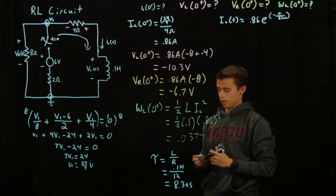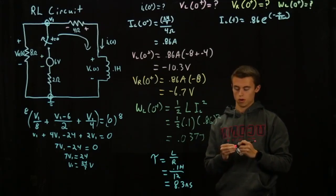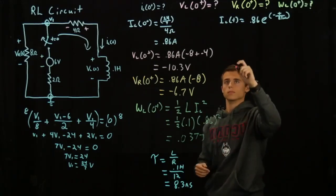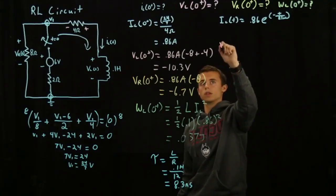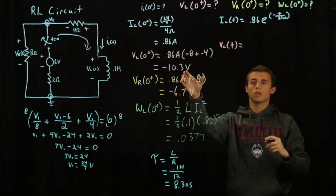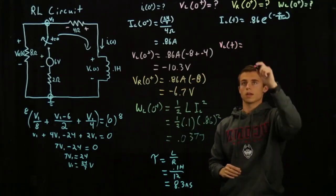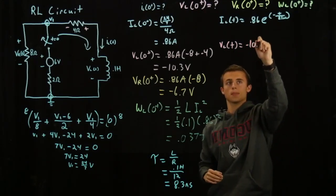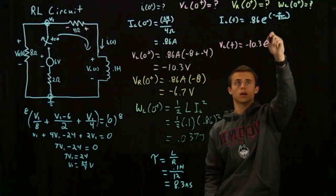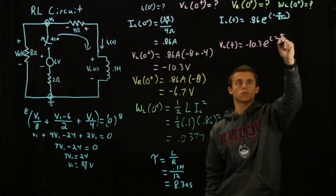So any value T you can plug in this formula and you can calculate the current going through the circuit. And then beyond there we can get the voltage time constant or time decay, where V_L of T is equal to the initial value 0 plus, negative 10.3, times the exponential decay as above, negative T over 8.3 milliseconds.